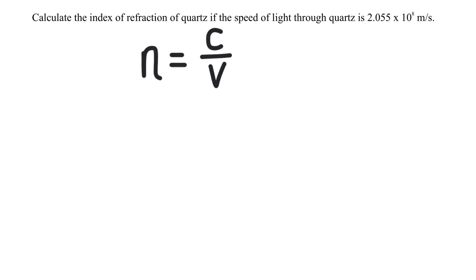First, I'll write the equation I need to solve the problem. Notice that in this problem, we are only given one piece of data. That's the speed of light in the material, and that's this variable right here. We want to calculate the index of refraction, that's n.